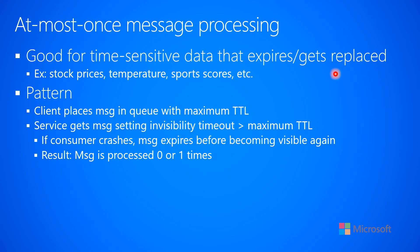A way to accomplish the at-most-once processing pattern using the queue mechanism is by having the client place a message in the queue with a maximum time-to-live. Then when a service gets the message, you set the invisibility timeout to a value greater than the maximum timeout. For example, a client puts a message with a timeout of 15 minutes, and the service pulls the message but sets the invisibility timeout to an hour. Now that message will stay invisible for an hour, but it's only going to live in the queue for at most 15 minutes. So when it becomes invisible, it will never become visible again — therefore, it will never be processed again. This is how we get the at-most-once message processing behavior.